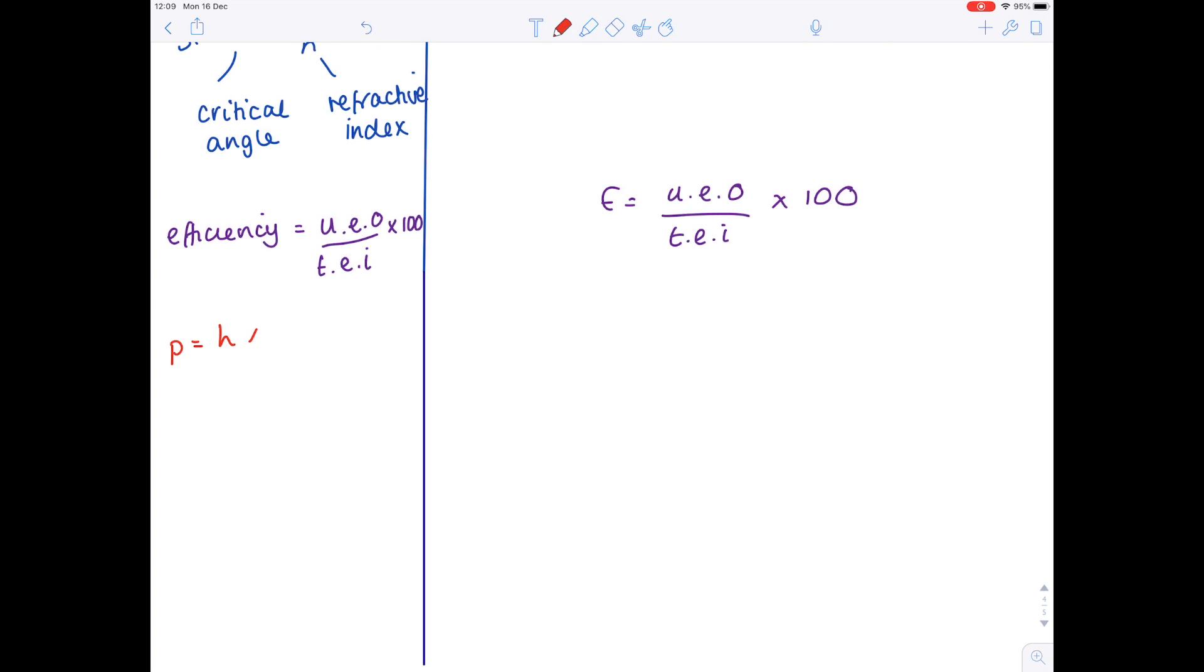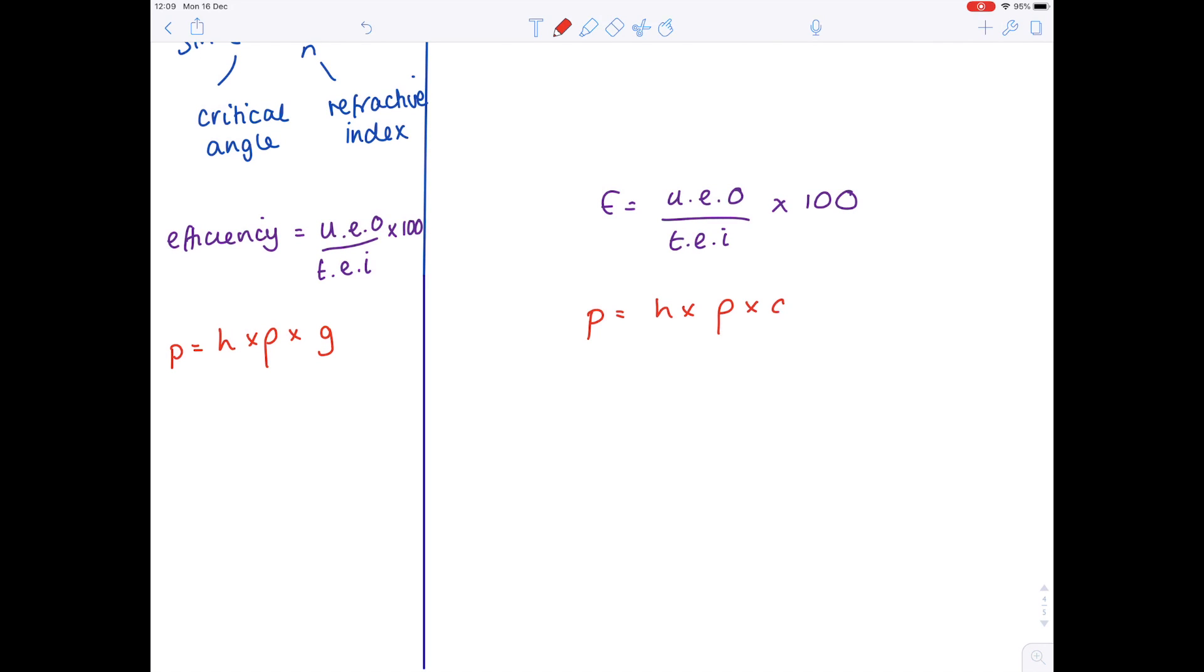Pressure difference equals height times density times gravity. Another strange one that just needs learning. So that is pressure difference, height, density, gravity, or gravitational field strength. I wouldn't bother putting that into a triangle personally.